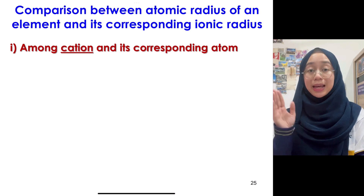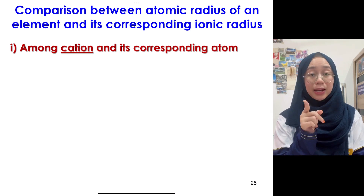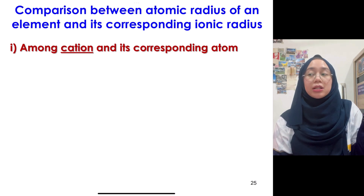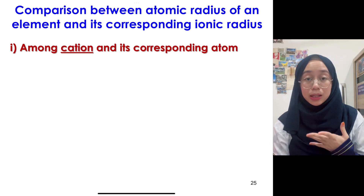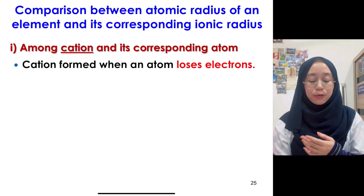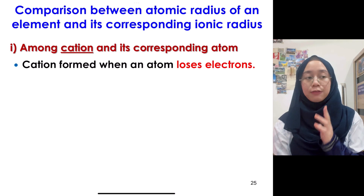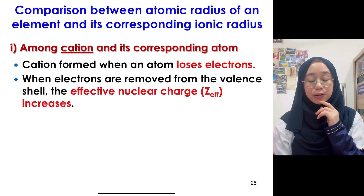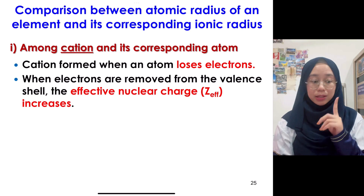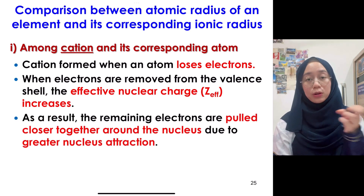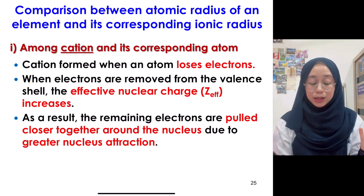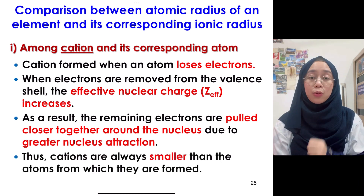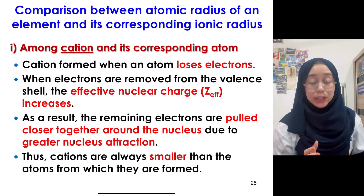Let's have a look at the comparison between an atom and its corresponding ion — specifically the cation. Is the cation larger or smaller compared to the atom itself? A cation is formed when an atom loses electrons. To form the most stable cation, electrons are removed from the valence shell. As a result, the effective nuclear charge increases, pulling the remaining electrons closer towards the nucleus. So cations are always smaller than the atoms from which they are formed.